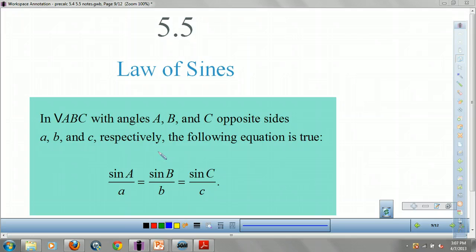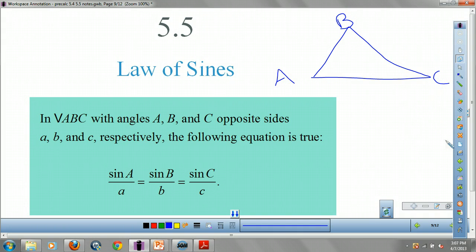So suppose you have a triangle A, B, C. Let's draw this triangle. Triangle A, B, C, right? Draw this in your notes. It's good for you. It's like taking vitamins. With corresponding sides, A corresponds to the side little a. See how they match up? B corresponds to the side little b. And C is opposite side little c.